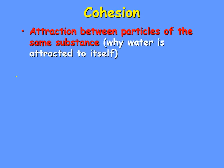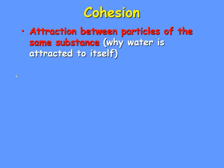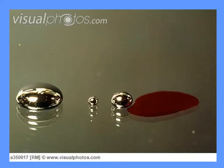So first off, cohesion. Here's your definition — please write this down. Cohesion is the attraction between particles of the same substance. So water is cohesive. Other things can be cohesive as well, as long as it's an attraction to itself — that's cohesion. Now, here's an example of cohesion.